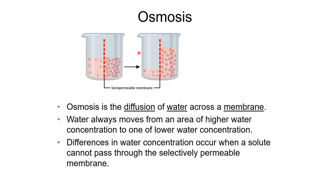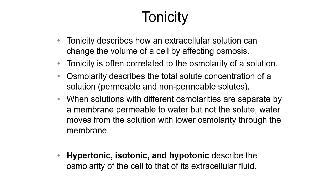Osmosis - osmosis simply means the diffusion of water across the membrane. When talking about aquatic organisms like fish, we discuss their osmolarity and how they keep their bodies in balance with their surrounding environment. With osmosis, water is always moving from a higher concentration to a lower concentration. Differences in water concentration occur when a solute can't pass through the selectively permeable membrane. Tonicity tells us how an extracellular solution can change the volume of a cell by affecting osmosis, and it's usually correlated to the osmolarity of a solution.